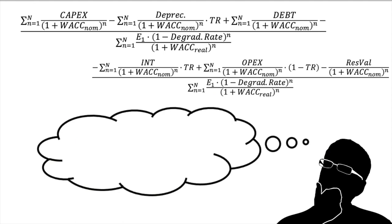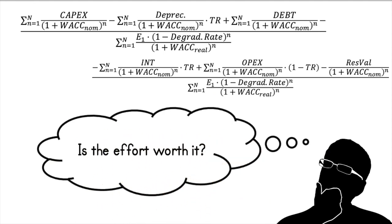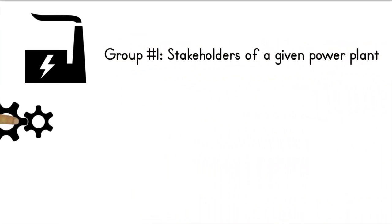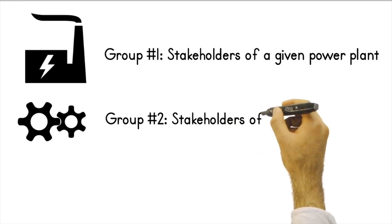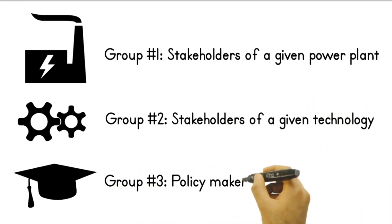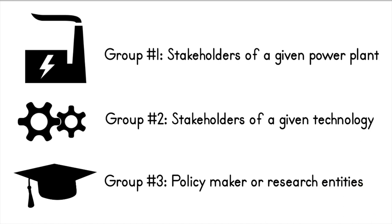The answer to the previous question will depend on the stakeholder. We basically have a first group of agents whose objective is the development of a generation plant, a second group that has to do with the development of technologies, and a third more focused on research and policy development.